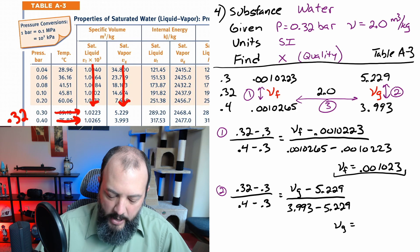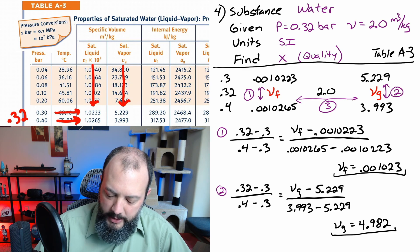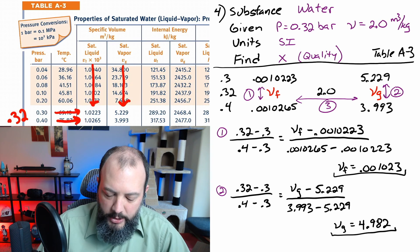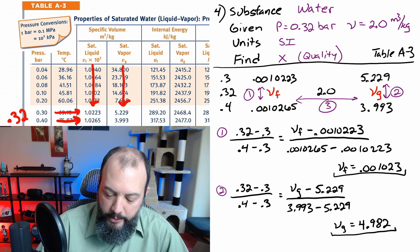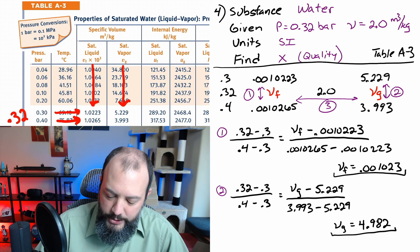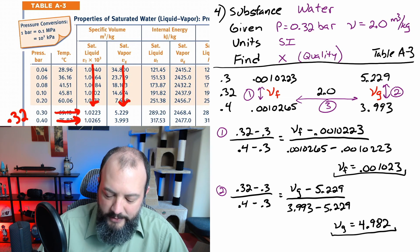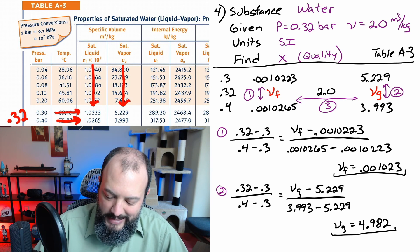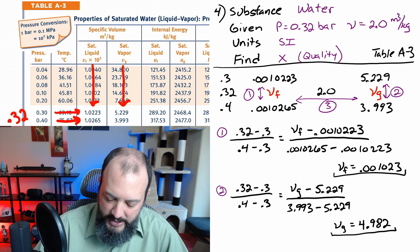And step two, I set up the same fraction for the ratio between pressures and solve for VG. Now I can check before I move on that both of these intermediate steps make sense. And since I note that 0.32 is much closer to 0.3 than 0.4, these two values that I just found should be closer to the 0.3 values than to the 0.4. So for VF, 0.001023 is closer to the 10223 than the 265. So that value makes sense. And for VG, the 4.982 is much closer to 5.2 than it is to 3.99. So that value also seems to make sense.